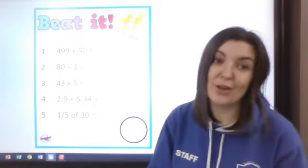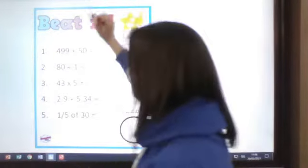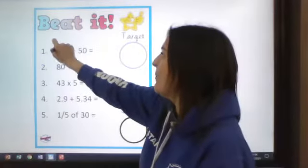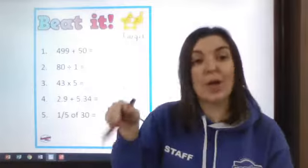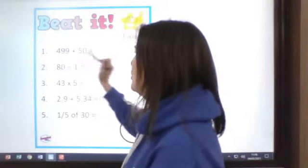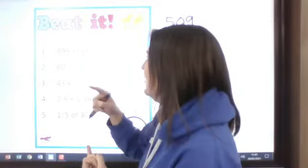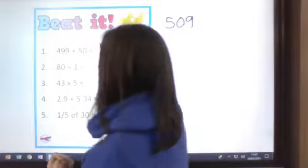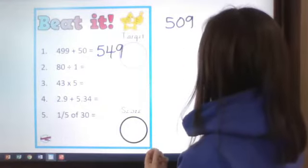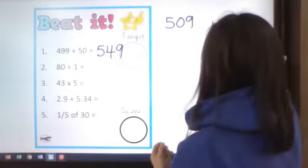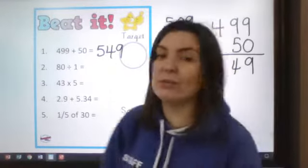So you should have had a little go at those. I'll quickly run through them with you. So we have got 499 add 50. Remember, it is the tens column we are looking at. We are adding five tens, but it's going to affect the hundreds because you are going over into the next 100. So it would go to 509 next, so that's 110. Then you can just count in your tens: 519, 529, 539, 549. So you should have 549. Some of you might have done a little column addition - that's fine, but remember we are trying to practice as many mental methods as we can.